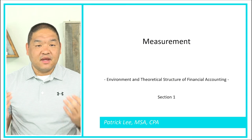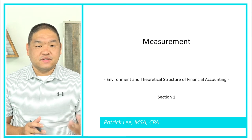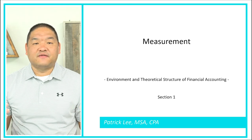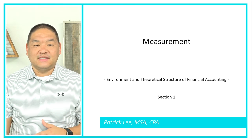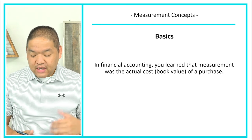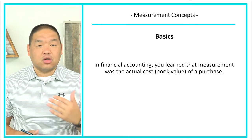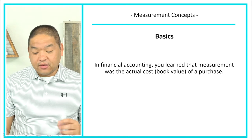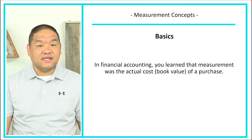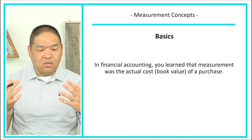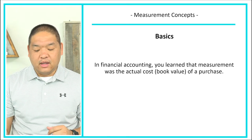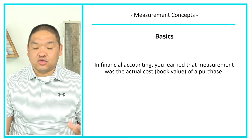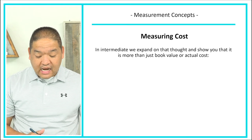In this lesson we're going to take a look at measurement. This is something you're probably familiar with from principles of accounting or fundamentals of accounting, but here we're going to define it from an intermediate standpoint. In financial accounting, measurement was the actual cost or the book value of a purchase. In intermediate accounting, we can expand on this to be more specific to the different ways measurement is defined for a particular transaction.